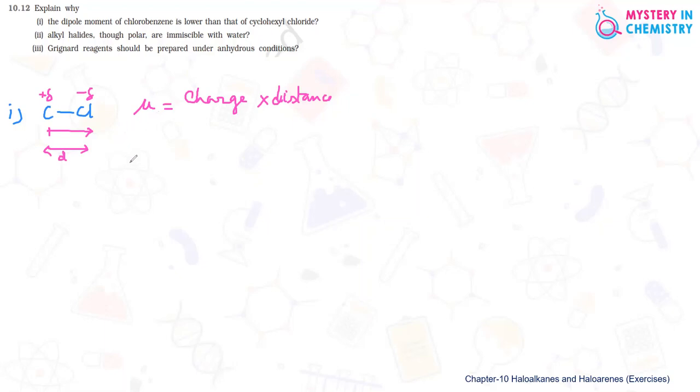First of all we have to see chlorobenzene. Chlorobenzene molecule is actually benzene with chlorine present over the benzene. Now here, first of all we have to think about this carbon. This carbon is actually sp2 hybridized. This carbon which is directly attached to chlorine is sp2 hybridized. So this can be your one reason.